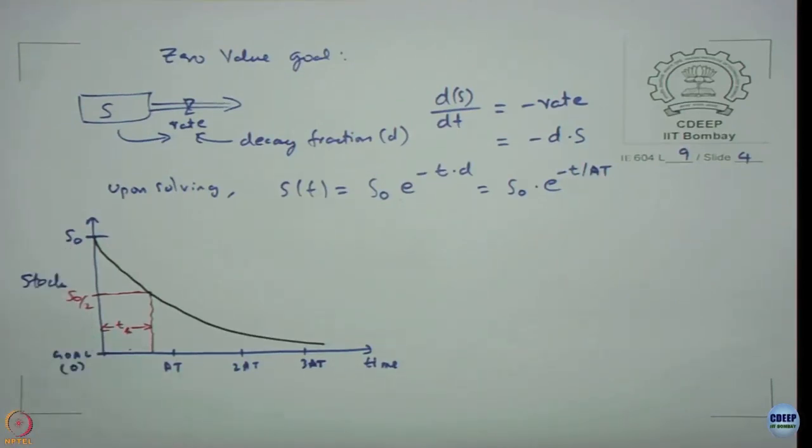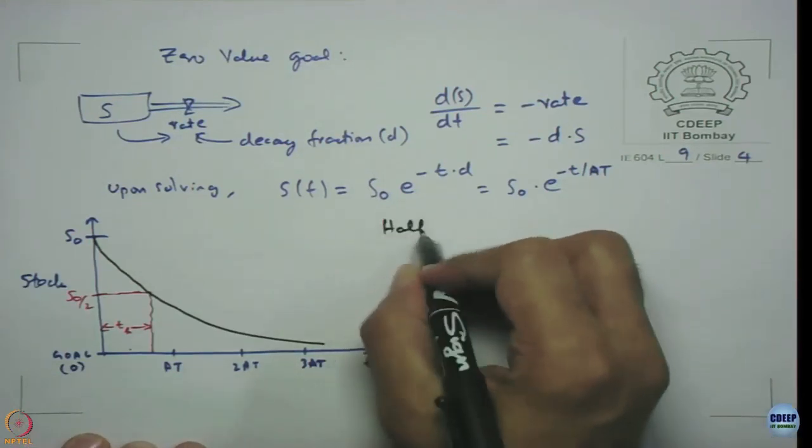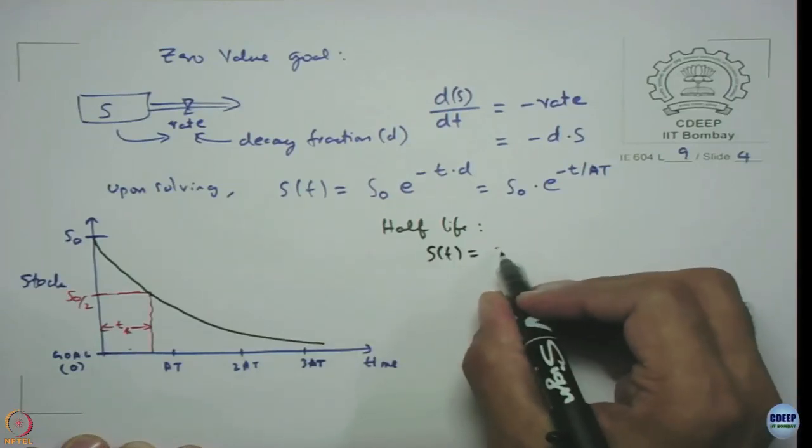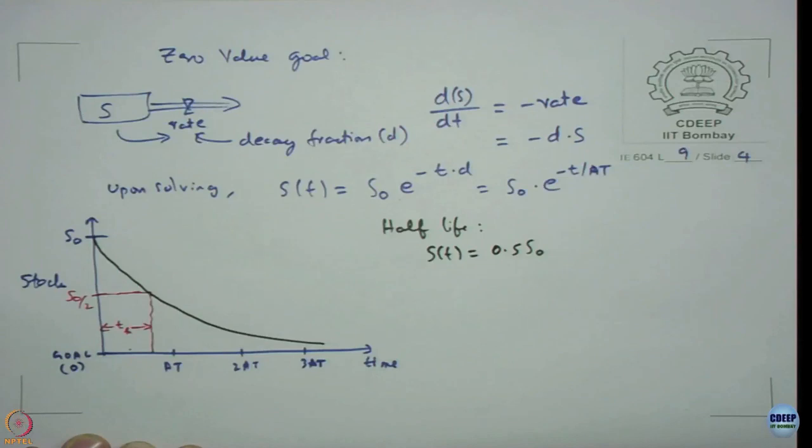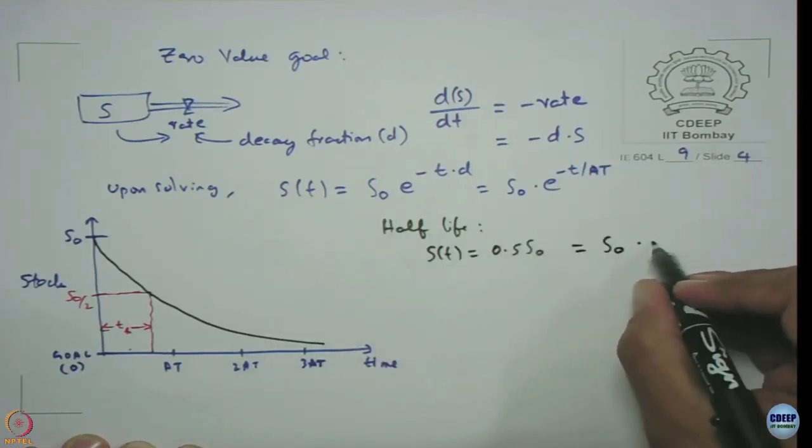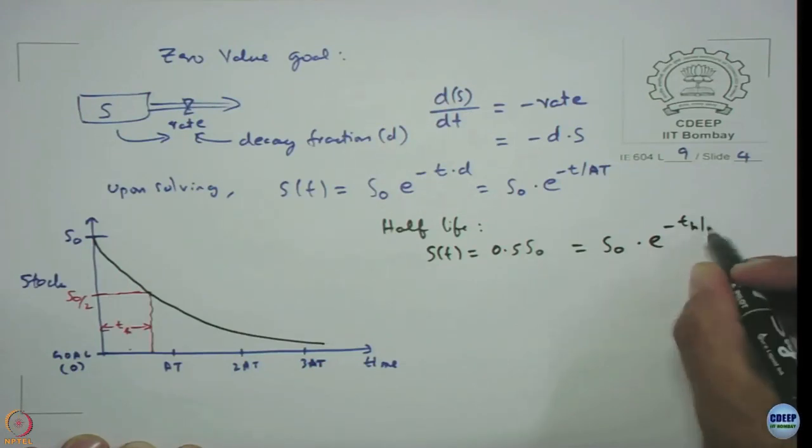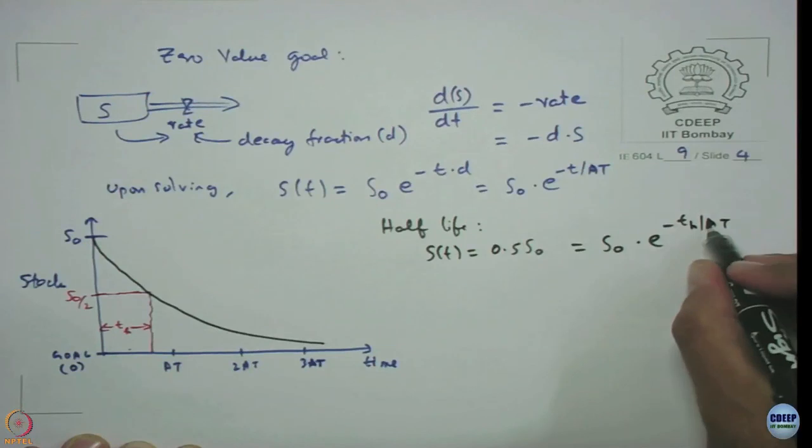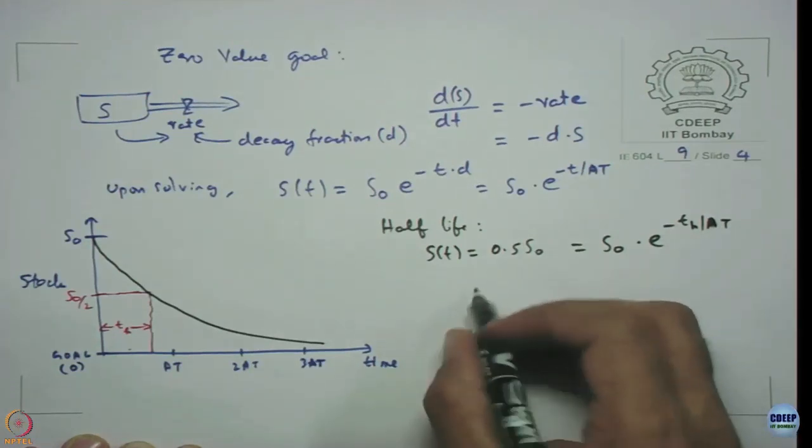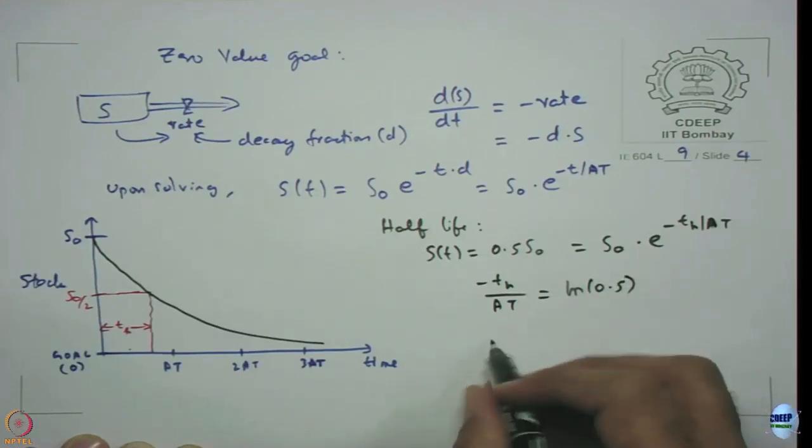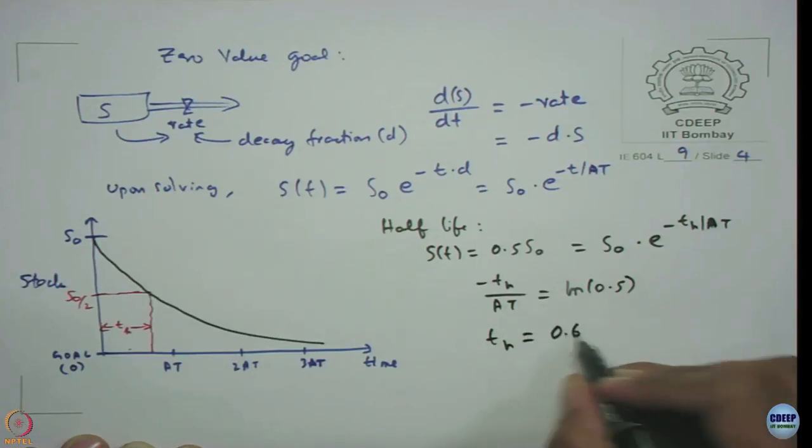We can straightforward compute it. Half life is when S(t) is 50 percent of your initial value. From the above equation we get this is equal to e^(-t_h/AT). Once you solve it, we get -t_h/AT = ln(0.5), so that means your half life is nothing but 0.6931 times your adjustment time, whereas your half life is equal to 0.69 times your adjustment time.